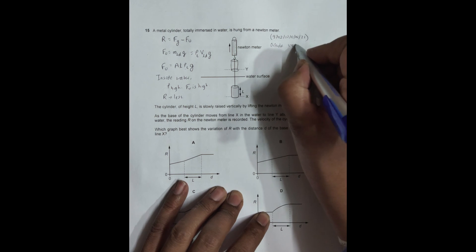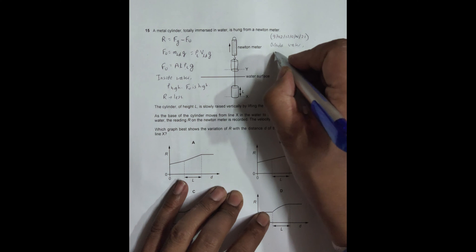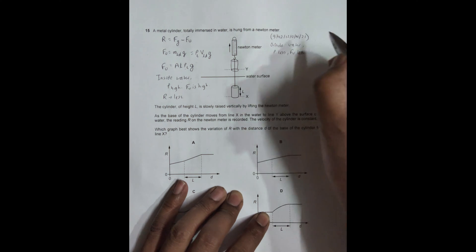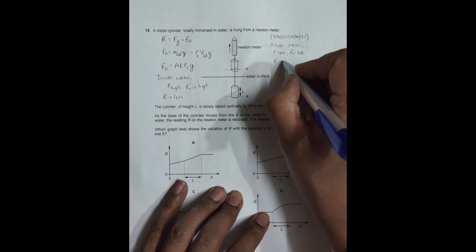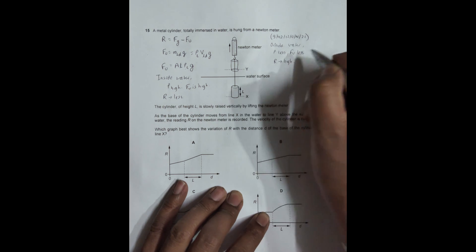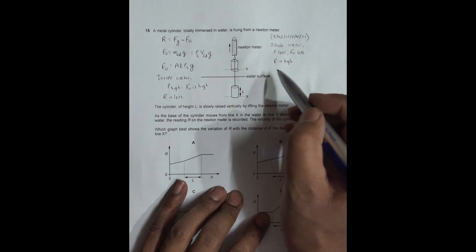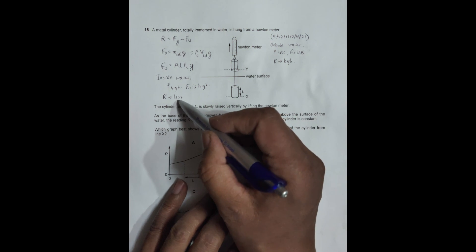Outside water, ρ will be less because it is air outside. If FU is less, then R will be equal to high. So inside water R is less, outside water R is high.